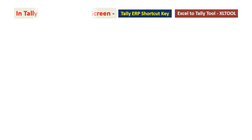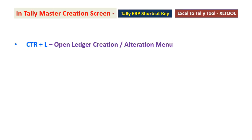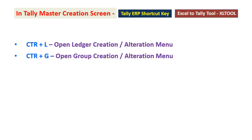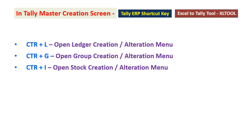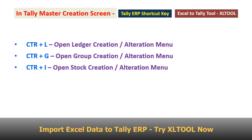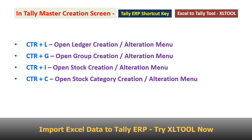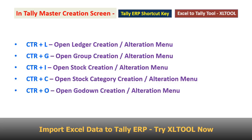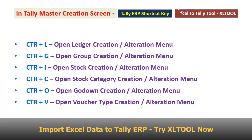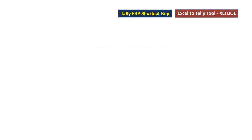Control L: Open Ledger Create Alter Menu. Control G: Open Group Create Alter Menu. Control I: Open Stock Create Alter Menu. Control C: Open Stock Create Alter Menu. Control O: Open Go Down Create Alter Menu. Control V: Open Voucher Type Create Alter Menu.